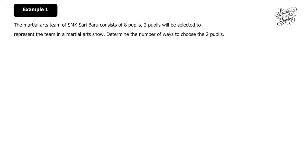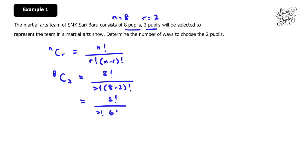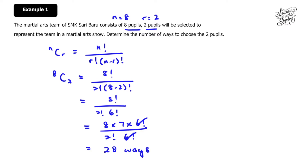Example 1: The martial arts team of SMK Saribaru consists of eight pupils. Two pupils will be selected to represent the team in the martial arts show. Determine the number of ways to choose the two pupils. Here n equals 8 and r equals 2, so we use 8C2. That gives 8 factorial over 2 factorial times 6 factorial, which simplifies to 8 times 7 over 2 factorial. The answer is 28 ways.